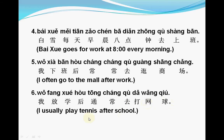The next sentence: 我放学后通常去打网球。 放学 means 'after school', 通常 means 'usually' or 'generally', 去 means 'go', 打 means 'play', 网球 means 'tennis'. So: I usually play tennis after school.